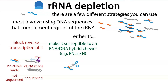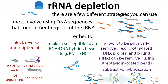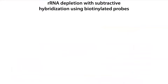A third strategy is to attach those probes to a handle like biotin, then get them to stick to streptavidin-labeled beads. The probe binds to the rRNA, and the probe also binds to these beads. This technique is called subtractive hybridization — the DNA probe hybridizes to your rRNA, and then you subtract it from your mixture using magnetic beads.